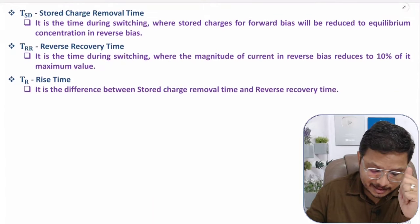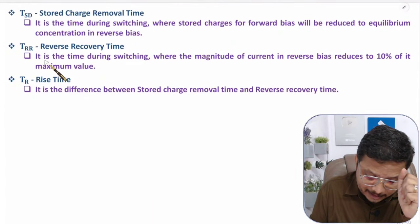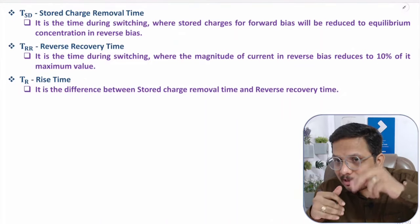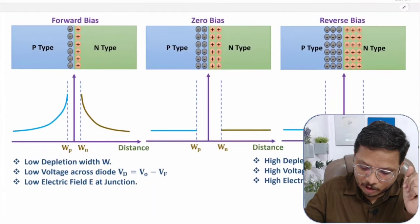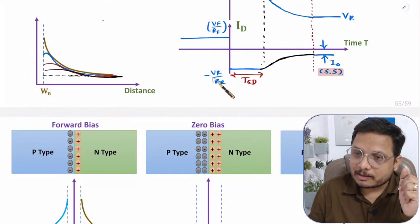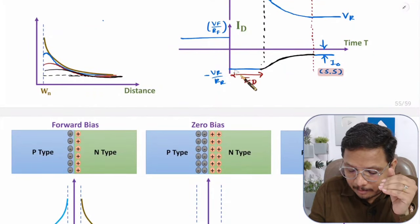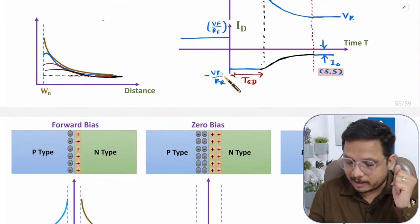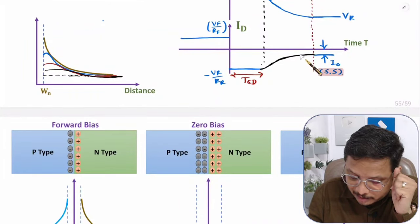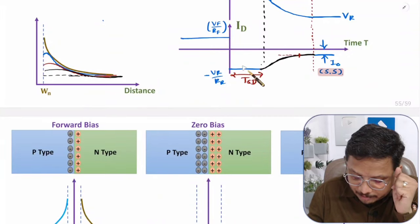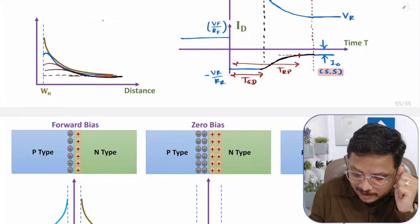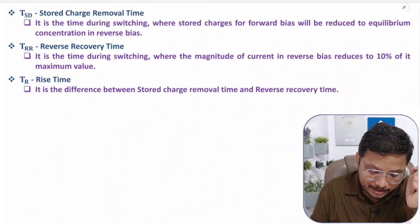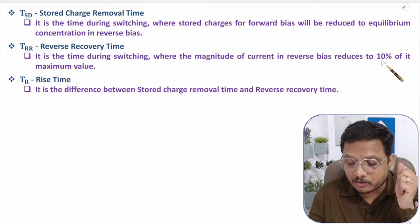Another important definition is reverse recovery time, TRR. It is the time during switching where the magnitude of the current in reverse bias reduces to 10% of its maximum value. The maximum current is minus VR over RR. This current stays constant up to TSD time, after which it starts to decrease. The reverse recovery time TRR is measured from T equals zero until the current reaches 10% of that maximum value.